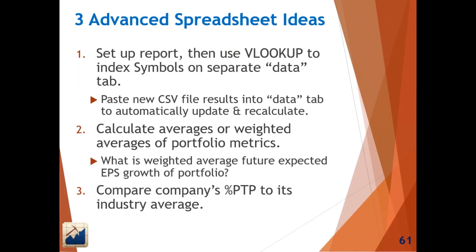Three advanced spreadsheet ideas: first, use Excel's VLOOKUP function to index symbols on a separate data tab — paste the updated CSV into a data tab and your formatted report updates automatically. Second, create weighted averages of portfolio metrics like weighted average growth rate or historical growth rate by company size using up-to-date MyStockProspector data. Third, compare each company's pre-tax profit to its industry averages directly in your spreadsheet.